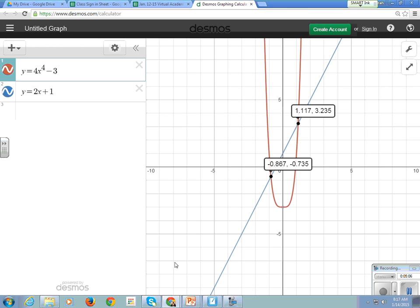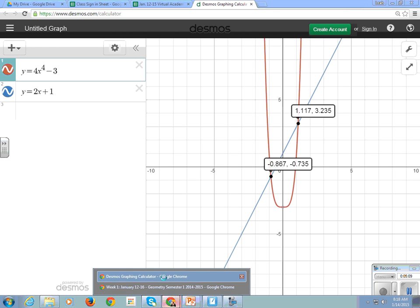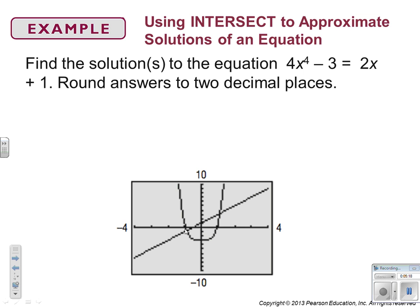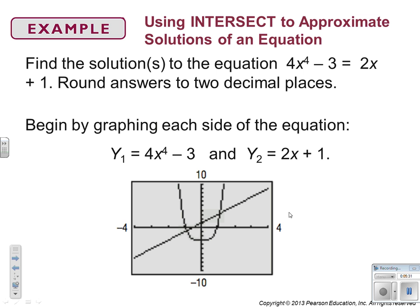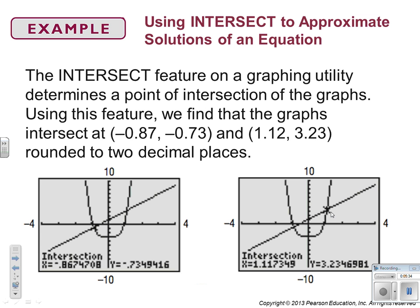On a graphing calculator, you would use the intersect function. You'd use the intersect operation and click on either side of the intersect point and hit enter, and it'll give you where it intersects. So, we get that the answers are negative 0.87, negative 0.73 and 1.12, 3.23.